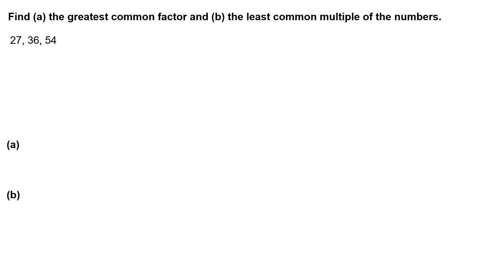Find Part A, the greatest common factor, and Part B, the least common multiple of the numbers 27, 36, and 54. First, write the prime factorization of each number.